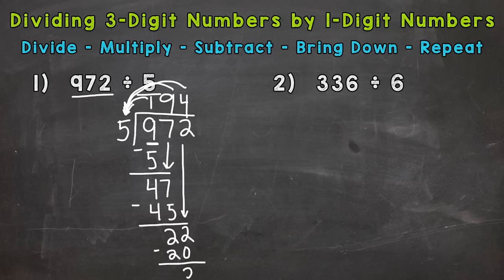Subtract, we get 2. Now we do not have anything else to bring down. We went all the way over to the ones place. So that 2 down there, that's our remainder. So we have 2 left over. The problem didn't work out to give us a perfect whole number. We have something left over. So 194 remainder 2 is our final answer.